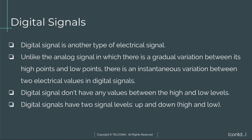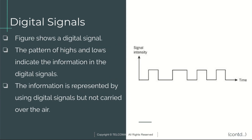Next is digital signals. A digital signal is another type of electrical signal. Unlike the analog signal, in which there is a gradual variation between its high and low points, there is an instantaneous variation between two electrical values in a digital signal, i.e., 0 and 1. Digital signals don't have any values between the high and low levels; they have two signal levels: high and low, or 1 and 0. This figure shows a digital signal, where the pattern of highs and lows indicates the information.